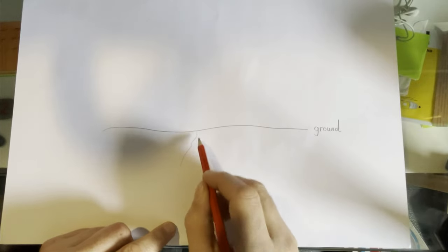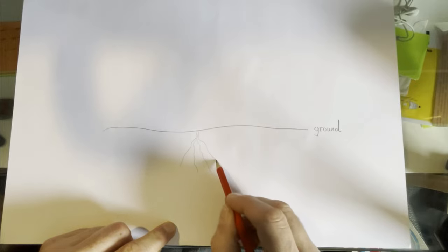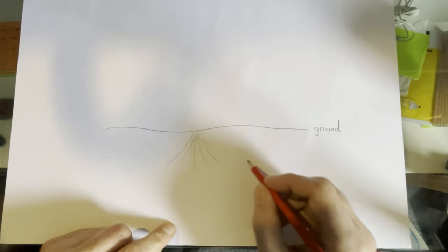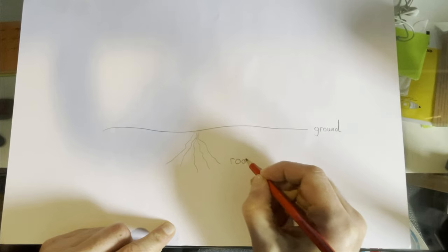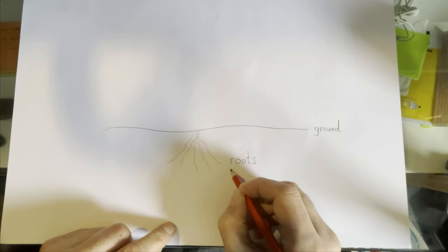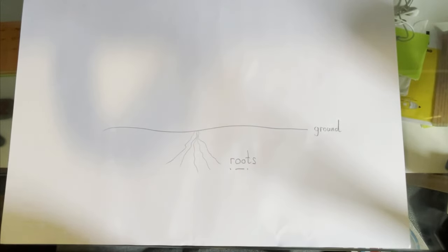We kind of go like this. They're kind of wiggly, thin lines. They are called roots. Below the ground, we see roots.